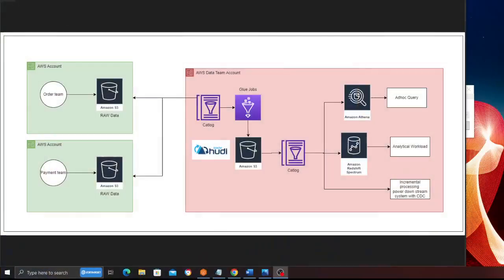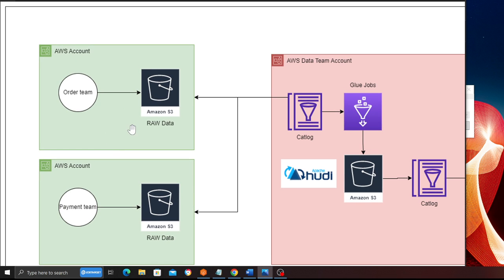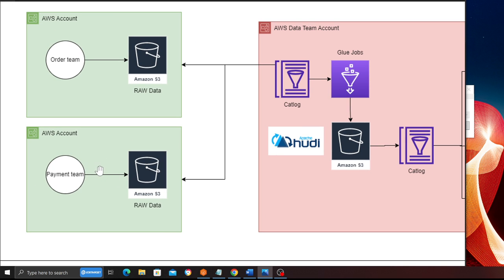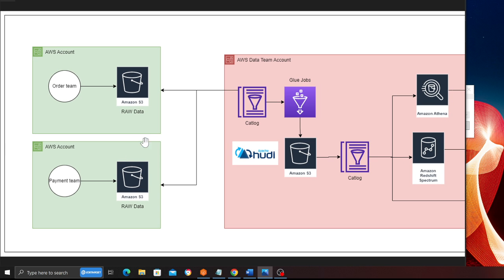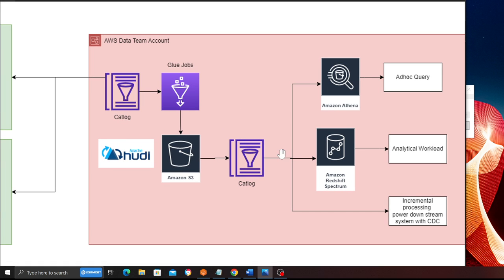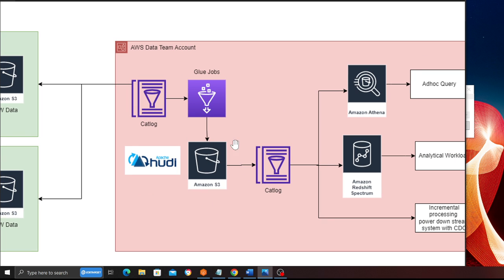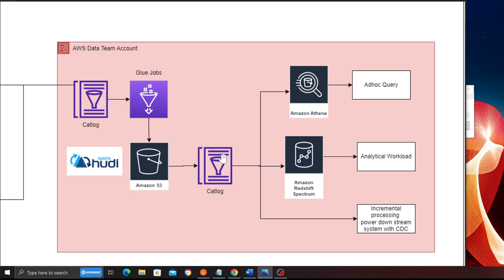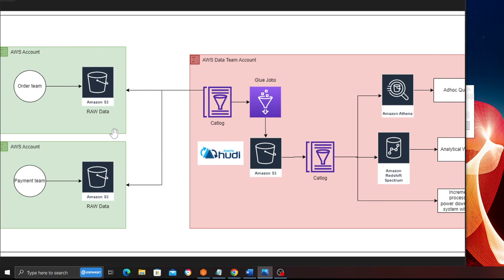Good morning everybody and welcome to the video. In this video I'm going to show you how to read data from a cross-account S3 bucket to build transaction data. In companies this is fairly common - you would have your S3 buckets, and if a company is using Control Tower, each team or application can have several AWS accounts. For example, the order team has their own AWS account with micro services deployed, dumping data in their S3 bucket. The payments team is also doing the same. Now you want to build a transactional data lake, but you are a data team given your own AWS account, and you want to read data from cross-account buckets.